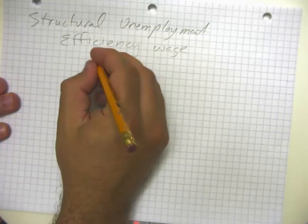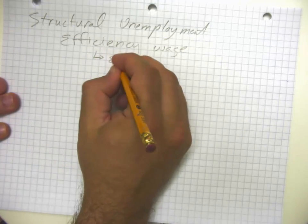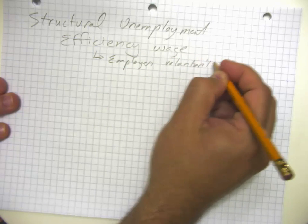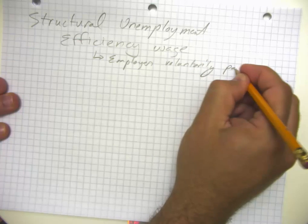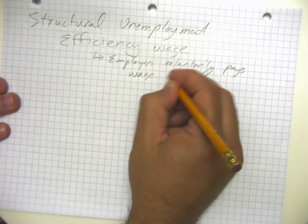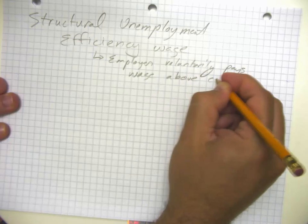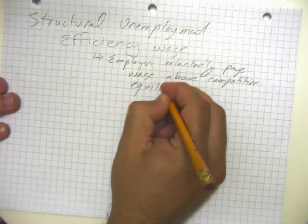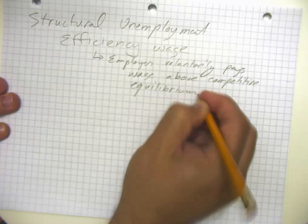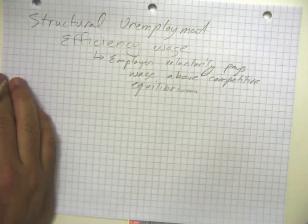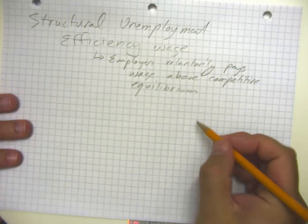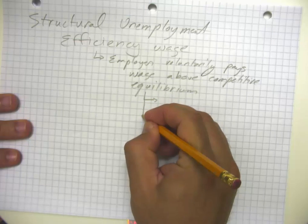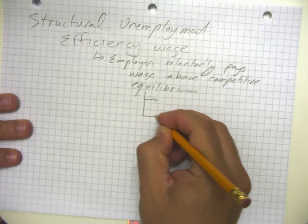The idea of an efficiency wage is the employer voluntarily pays wage above competitive equilibrium. Why would they do this? They do this because somehow that's actually cheaper, all things considered, than paying people that lower wage.